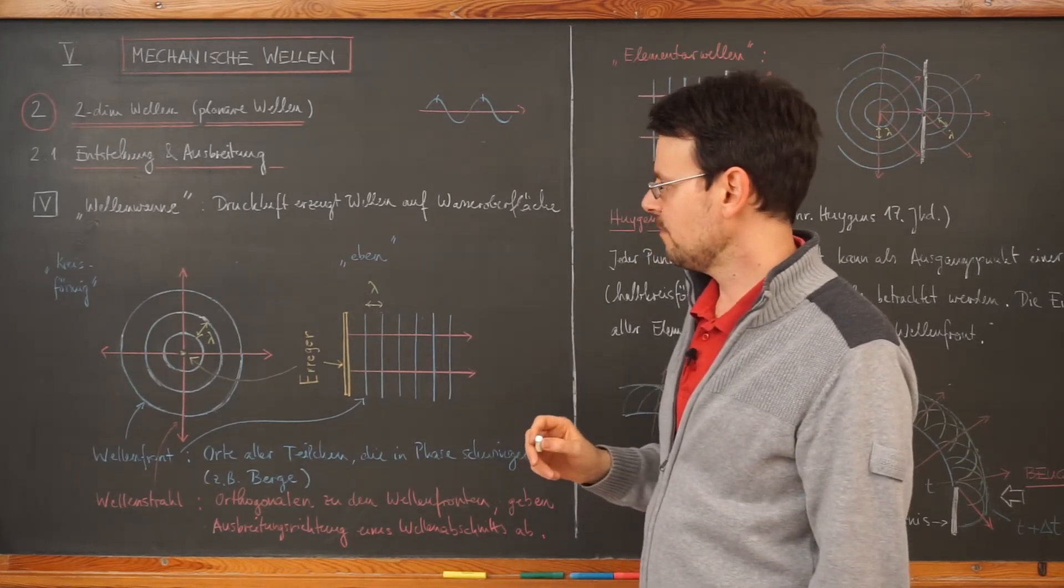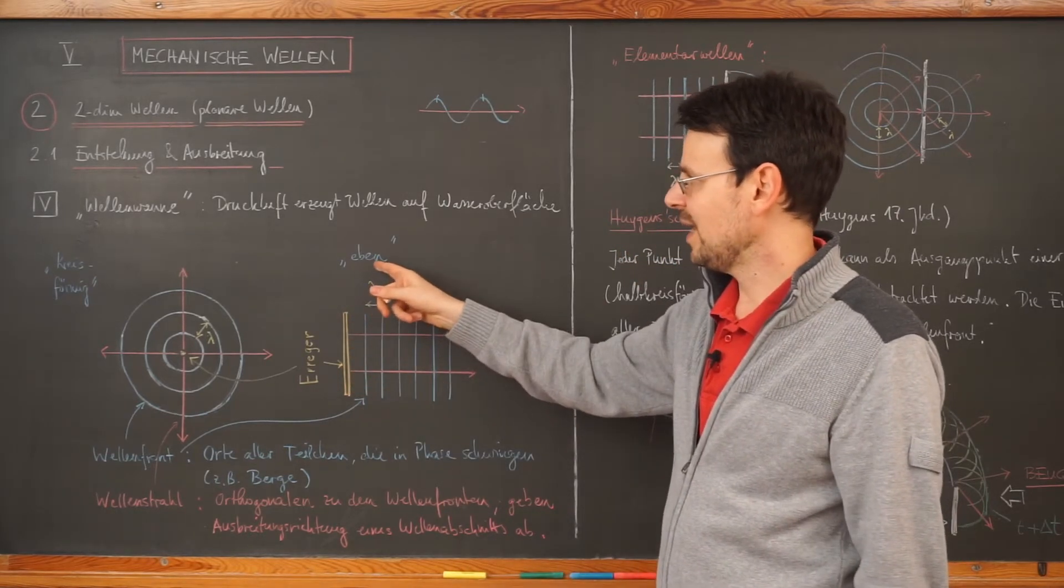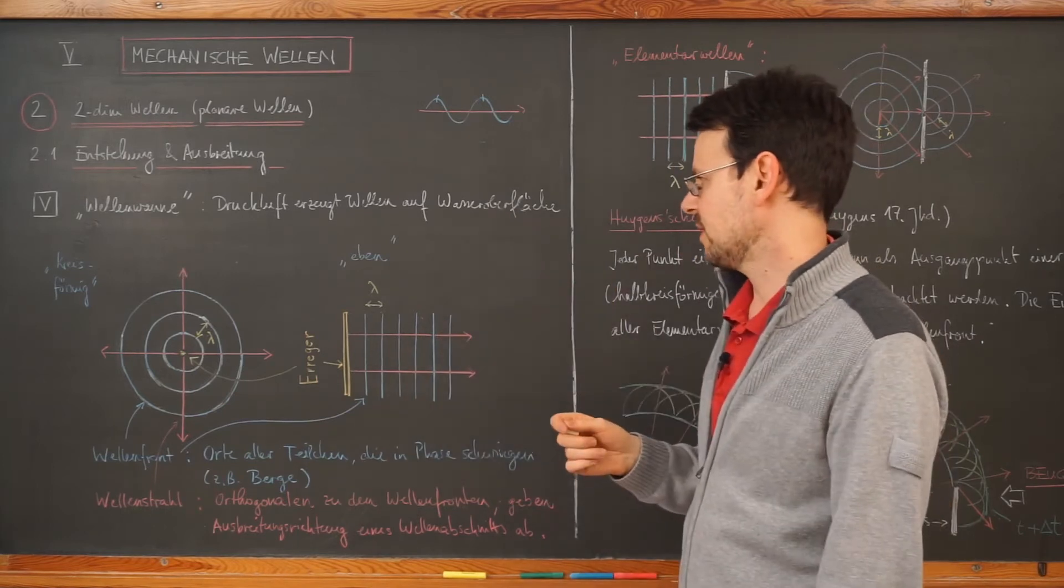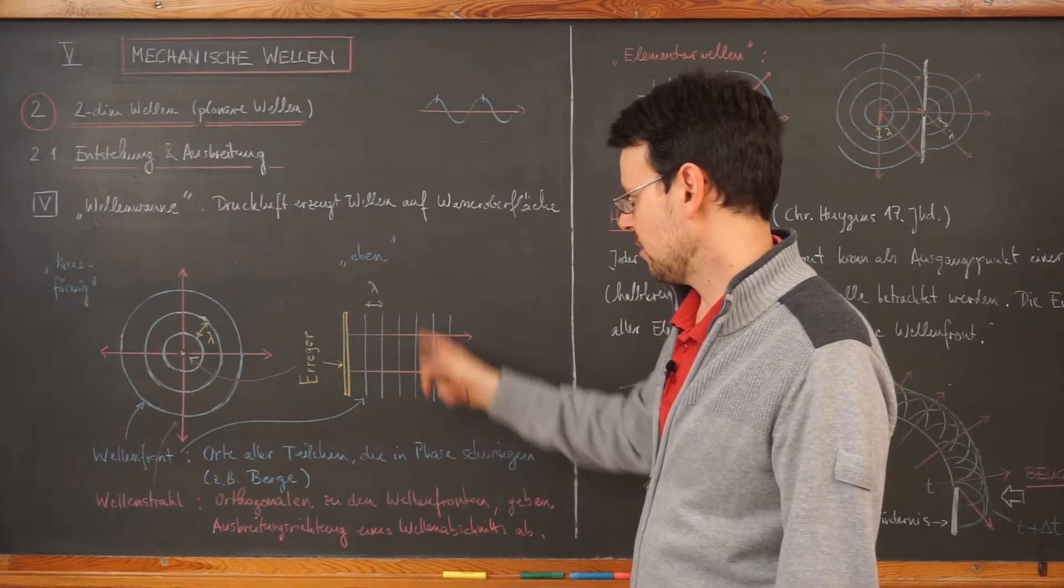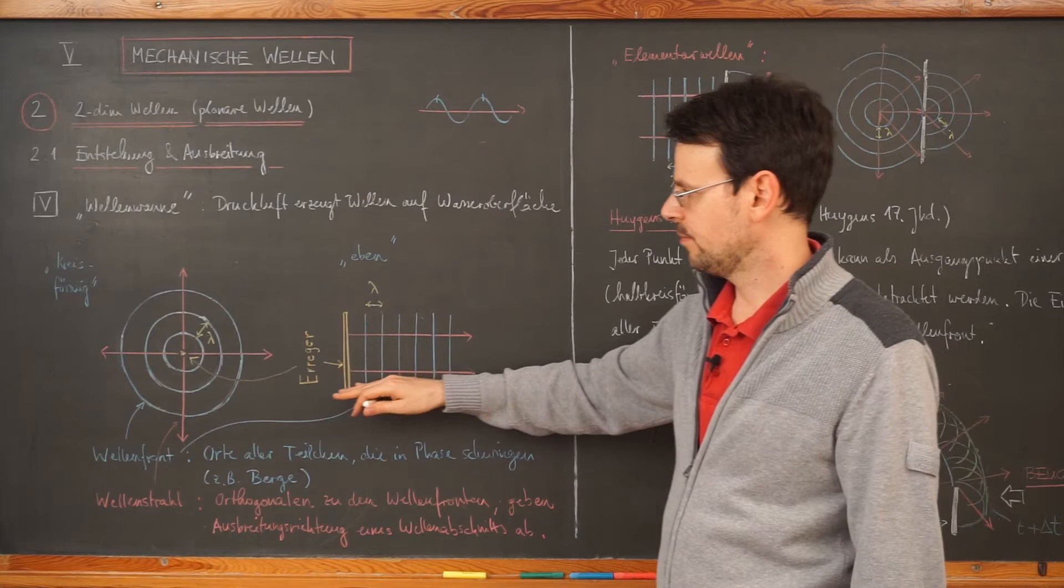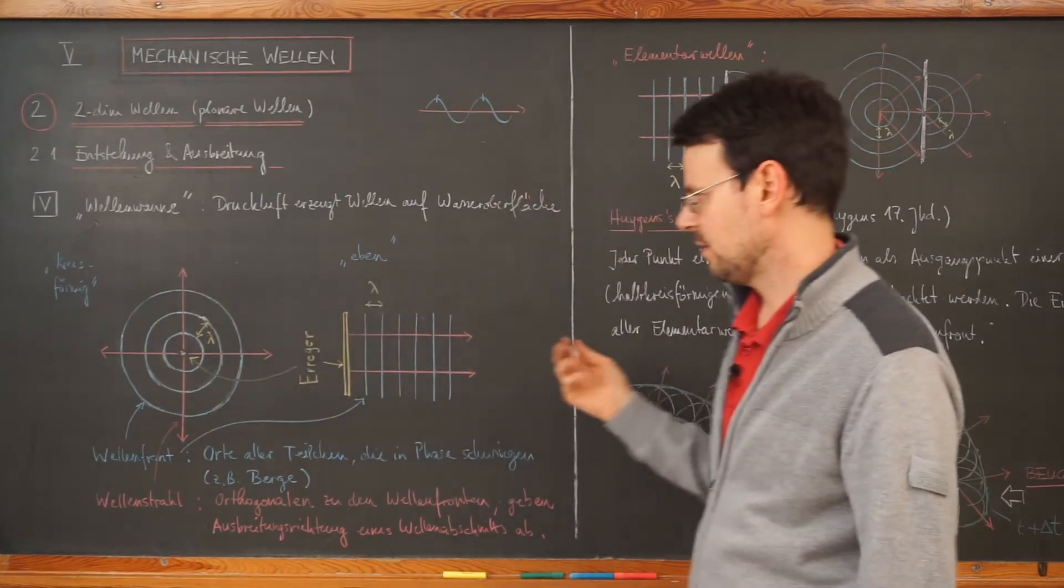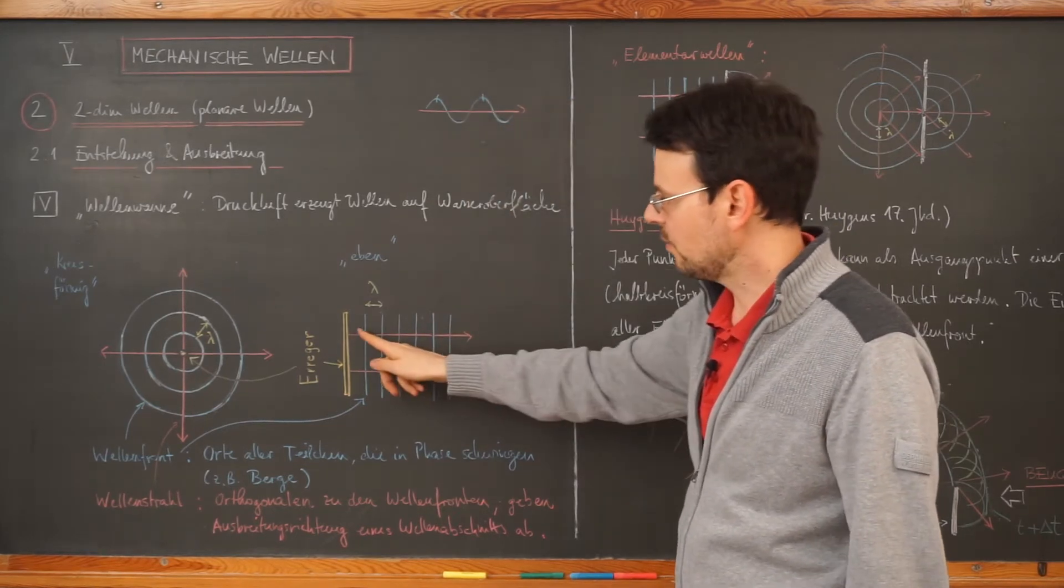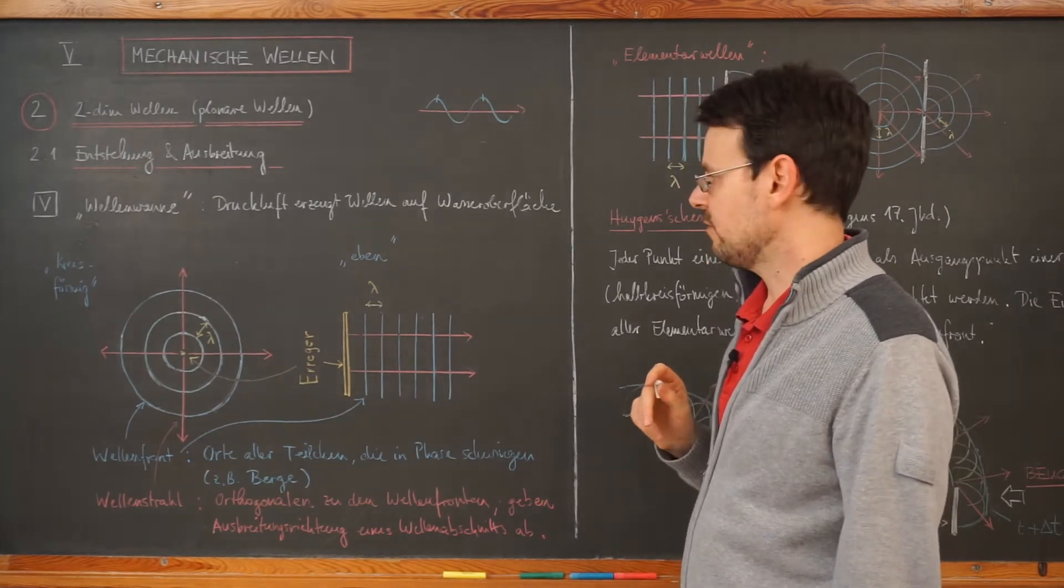Das wären die kreisförmigen Wellen. Dann haben wir gesehen, wenn wir hier so einen länglichen Erreger nehmen, wo überall die Druckluft rauskommt, dann entsteht eine sogenannte Ebenewelle. Das ist ein bisschen ein verwirrender Ausdruck, weil die verlaufen ja alle innerhalb einer Ebene, aber das hat sich eben so eingebürgert. Da ist klar, die Wellenfronten sind hier einfach parallele Linien und die Wellenstrahlen sind die Orthogonalen dazu, die hier auch parallel sind. Vielleicht auch deswegen Ebenewelle, weil die Wellenstrahlen hier immer parallel verlaufen, nicht so wie hier. Ich weiß es tatsächlich nicht genau. Und auch hier könnt ihr euch wieder vorstellen, Blickrichtung entlang eines Wellenstrahls gibt ein solches Bild. Und jeweils hier wären die Wellenberge und entsprechend haben wir hier die Wellenlänge Lambda als Abstand zwischen den Wellenfronten.